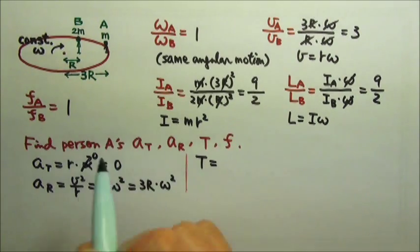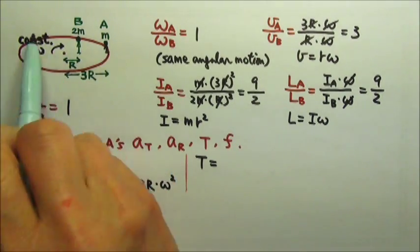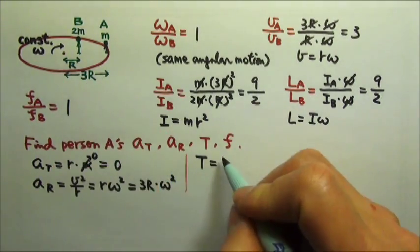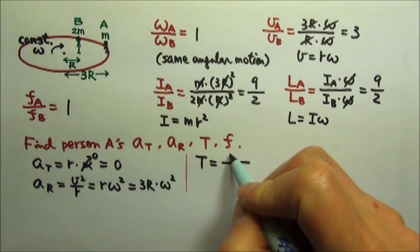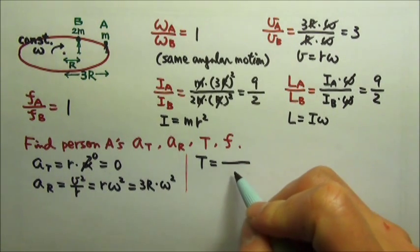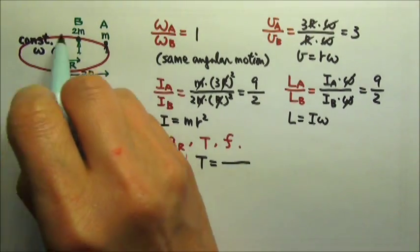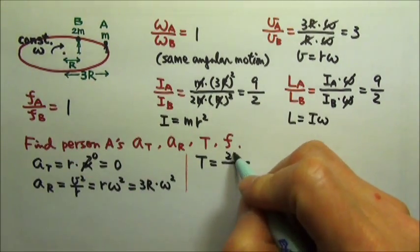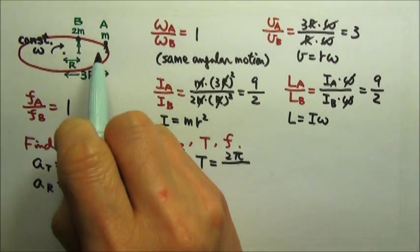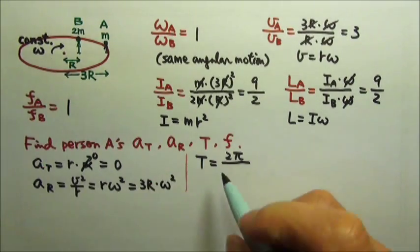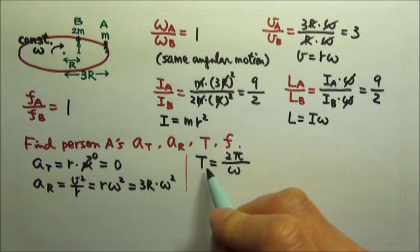And then the period. Period is the time it takes for person A to go around one circle. So it is the angular distance traveled divided by the angular speed. The angular distance traveled in one circle is 2 pi radians, and the angular velocity is omega. So this is the period.